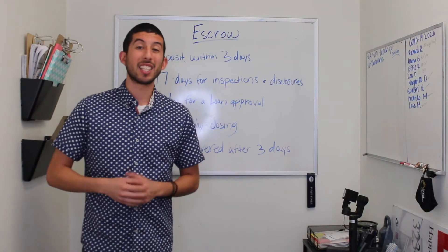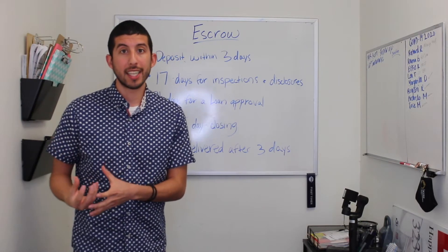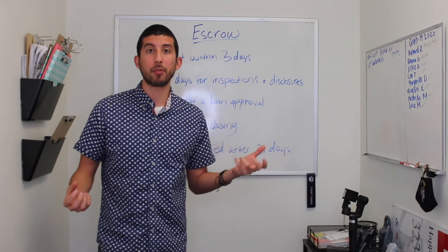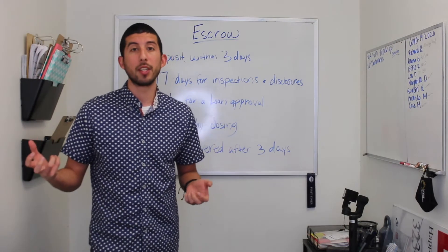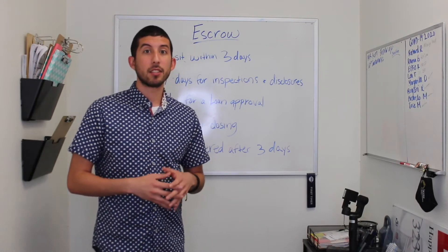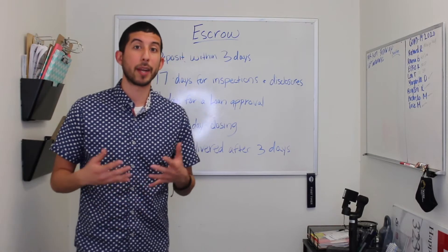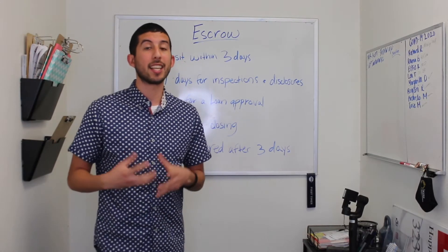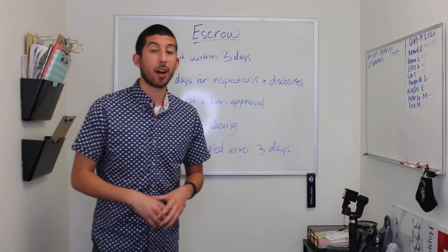A buyer has 21 days to get their loan approved. A loan approval is different from a pre-approval — a pre-approval is what you use to go out and look at property, while a loan approval is when the bank zeros in on your file and looks closely at your financial documents to make sure you qualify for that loan. After 21 days, the lender will give you a loan approval.